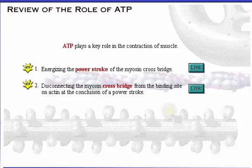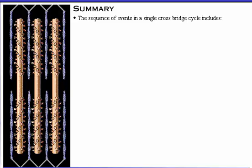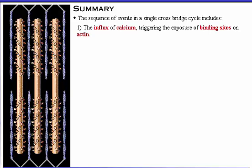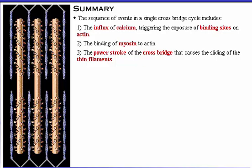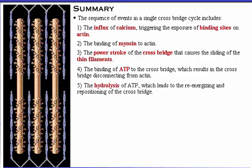Here's a summary of what we've covered. The sequence of events in a single crossbridge cycle includes: 1. the influx of calcium triggering the exposure of binding sites on actin; 2. the binding of myosin to actin; 3. the power stroke of the crossbridge that causes the sliding of the thin filaments; 4. the binding of ATP to the crossbridge, which results in the crossbridge disconnecting from actin; 5. the hydrolysis of ATP, which leads to the re-energizing and repositioning of the crossbridge; and 6. the transport of calcium ions back into the sarcoplasmic reticulum. Multiple crossbridge cycling is coordinated sequentially to prevent all crossbridges from either being connected or disconnected at the same time.